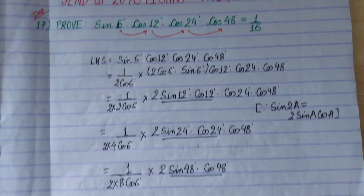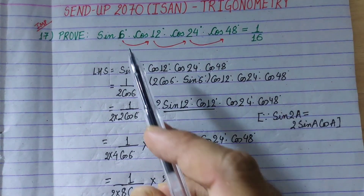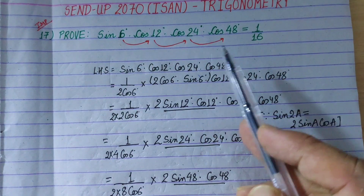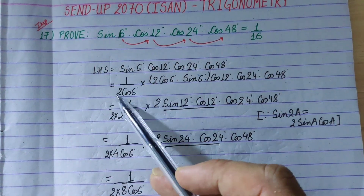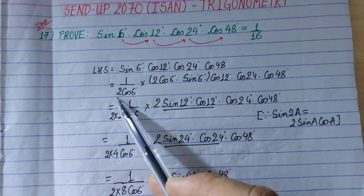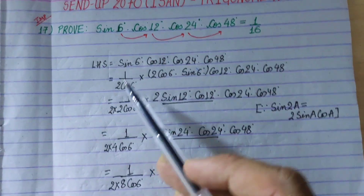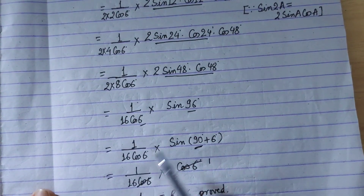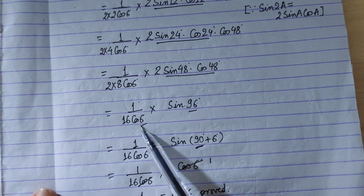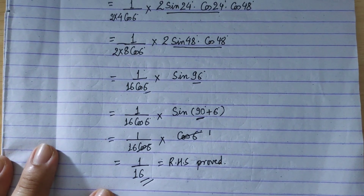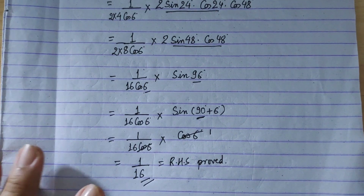To summarize: we used the double angle property where the angles 6, 12, 24, and 48 are each double the previous. By repeatedly applying the formula 2 sin A cos A equals sin 2A and multiplying by 2 cos 6° in numerator and denominator, we converted the product and finally proved the result equals 1 by 16. Thank you.